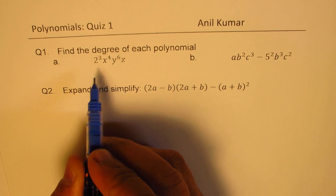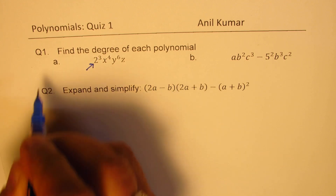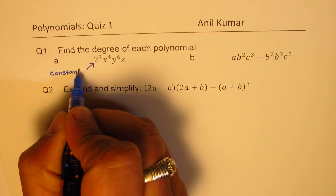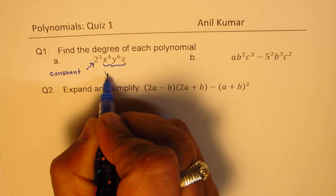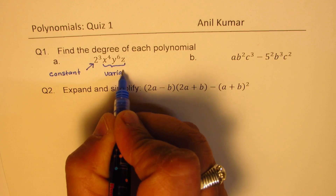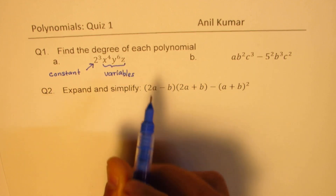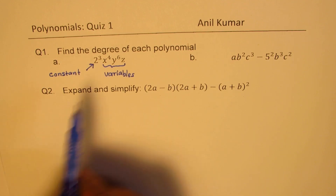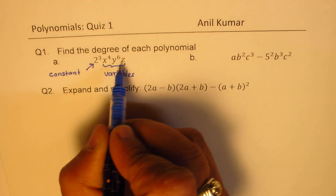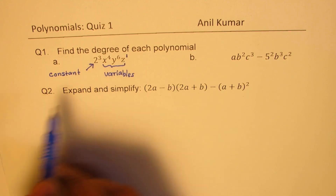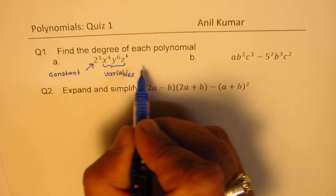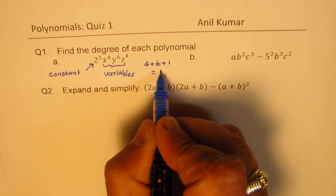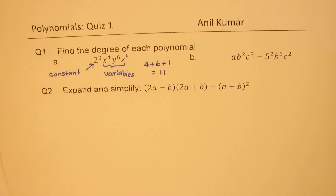Remember, this is a constant, and these are the variables. When we talk about degree, we add the exponents of the variables when they are multiplied. So if nothing is written, that means the exponent is one. So basically, the degree will be four plus six, which is ten, plus one, which is eleven. So the degree will be eleven in this case.